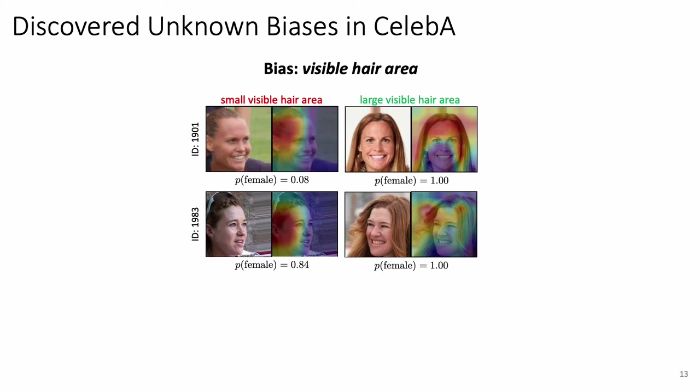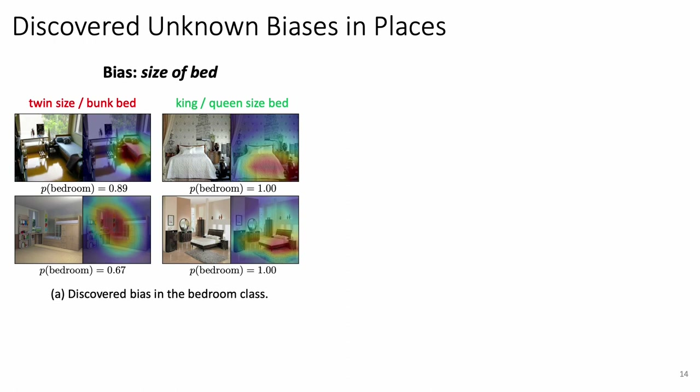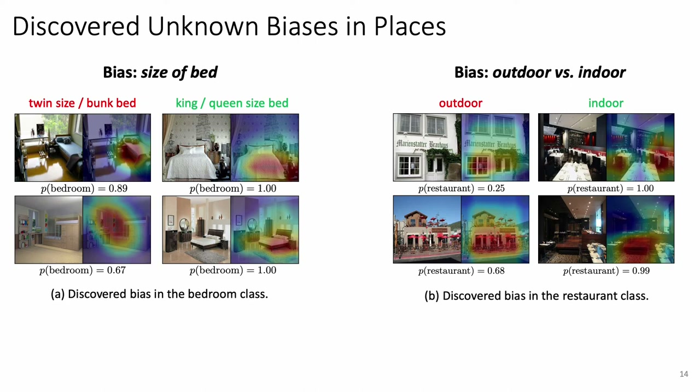We show that Debian can find some unknown biases that humans cannot preconceive. For example, in the CelebA dataset, a gender classifier is biased against the visible hair area — a larger area boosts the classifier's confidence on the female prediction. In the Places dataset, a scene classifier is biased by the size of the bed when predicting the bedroom class, and its restaurant prediction is biased by outdoor versus indoor scenes.